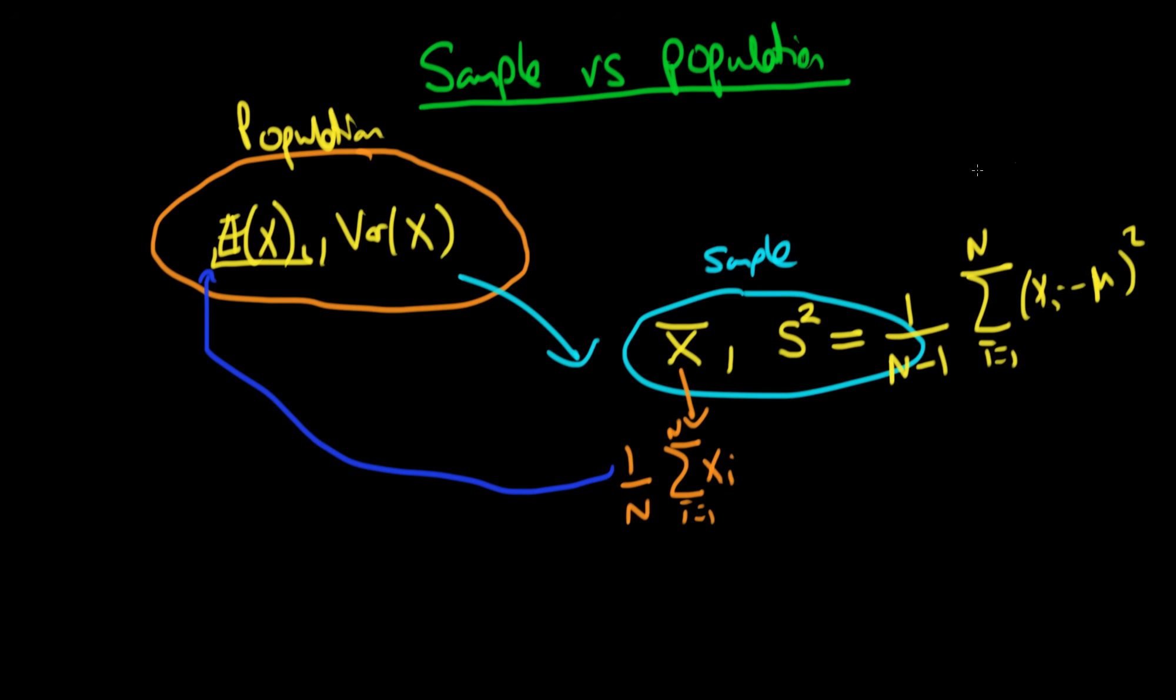And again we use the same naming in the sample as we do in the population. We say that this is the variance of the variable or the variance of points in our sample. But it is completely different to the variance of a random variable X if we have the probability distribution. It is merely an estimator for that particular quantity.